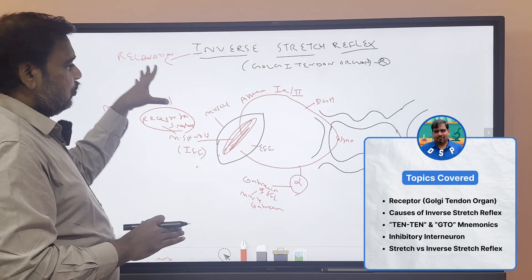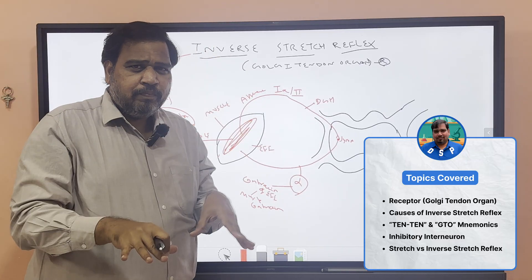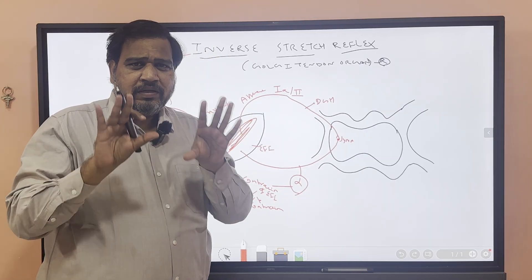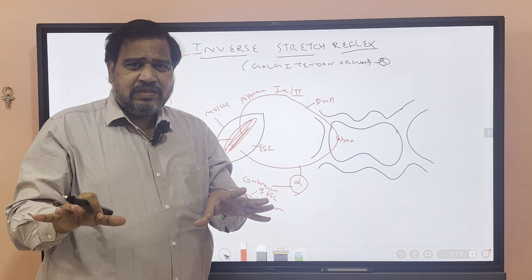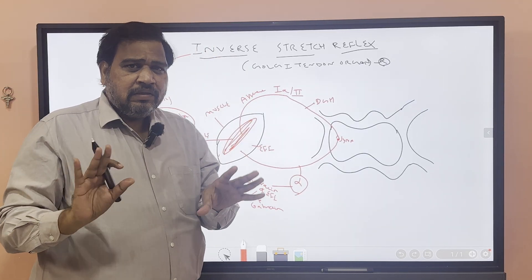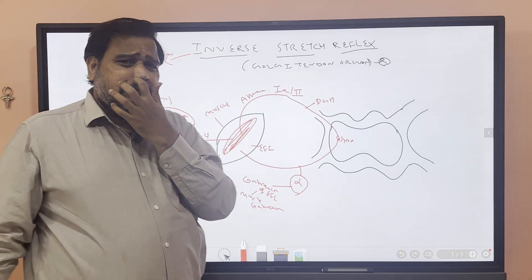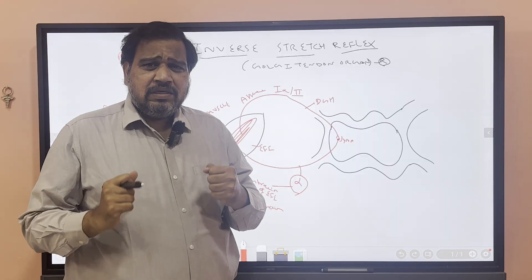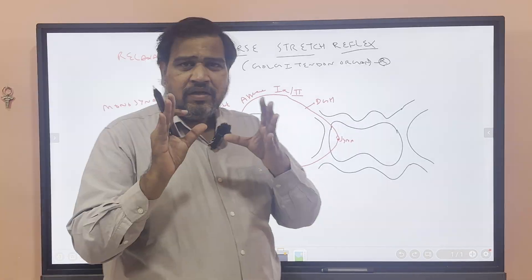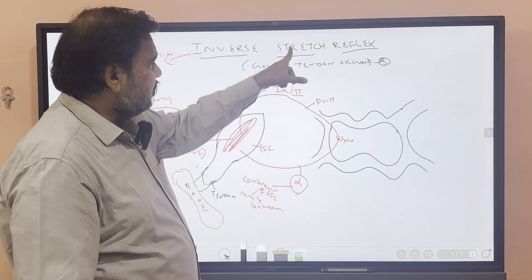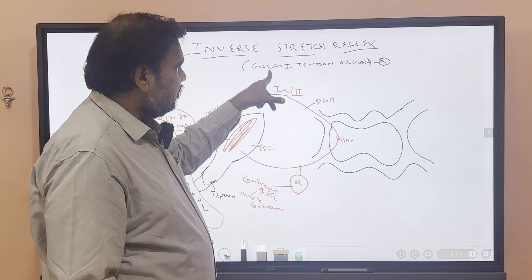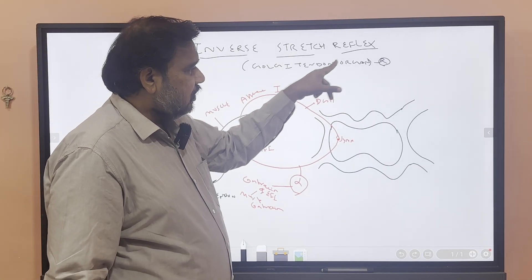Inverse stretch reflex — the final output is relaxation of the muscle. But what triggers inverse stretch reflex? What causes it? The receptor for inverse stretch reflex is Golgi tendon organ.